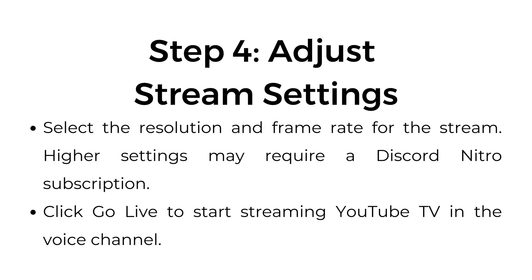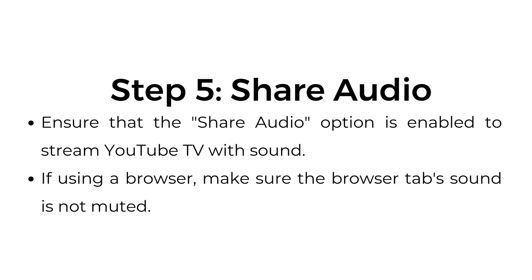Step number four: adjust stream settings. Select the resolution and frame rate for the stream. Higher settings may require a Discord Nitro subscription. Click go live to start streaming YouTube TV in the voice channel.